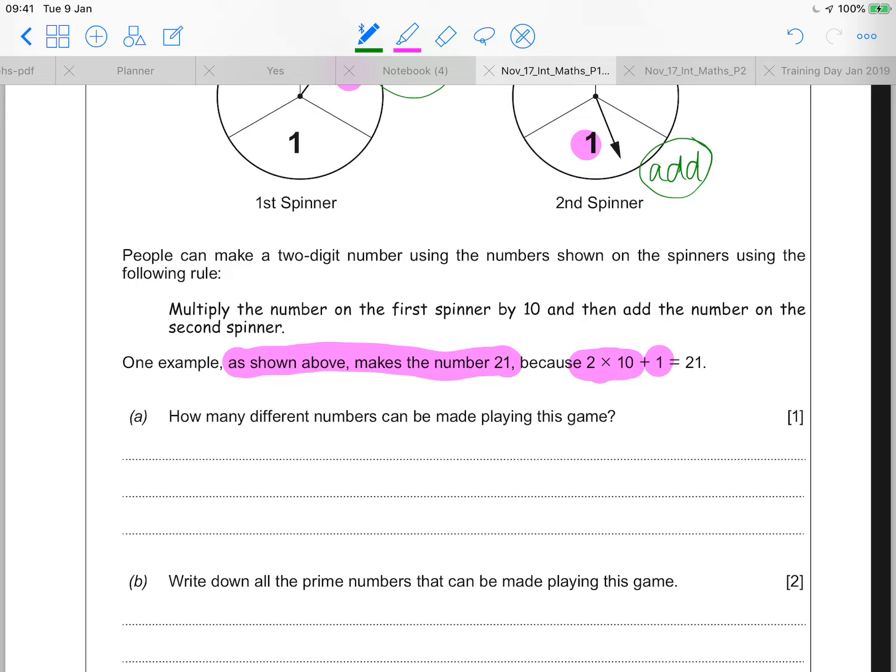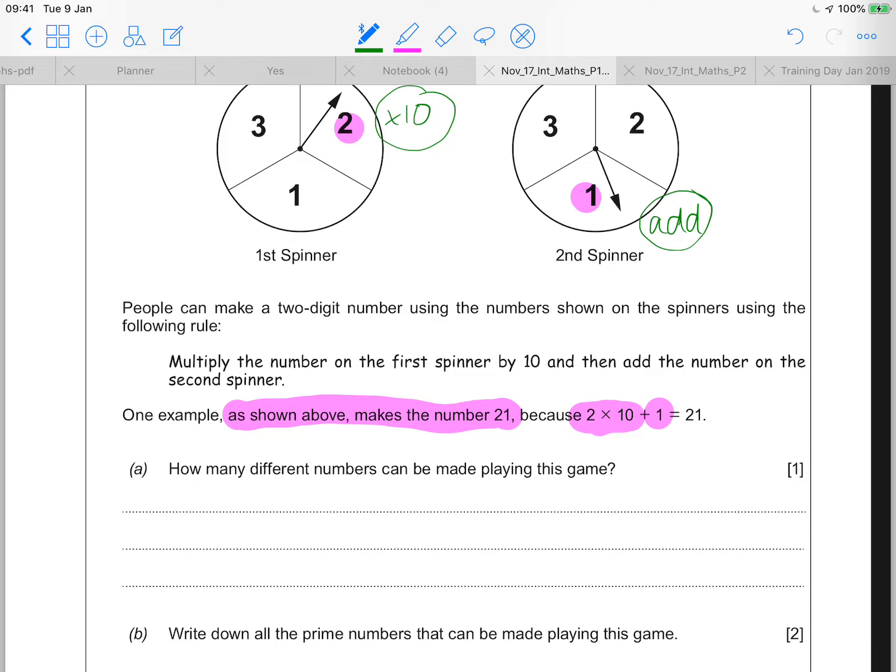Part A says how many different numbers can be made playing this game. So if I play this game, I've got to think about all the combinations I can get from spinning those two spinners. So I could end up with a one, two or three on the first spinner. And then if I spin the second spinner straight after it, that could also give me a one, two or three. So I could end up with a one on both. So that's going to give me a 10 plus one, which is 11. A one and a two, ten plus two, which would be 12. Or a one and a three, ten plus three, which is 13. Either way I think about it, I can see that I'm actually going to have nine different answers.